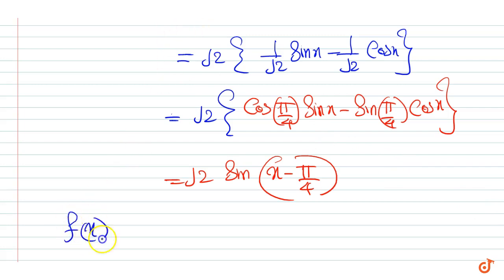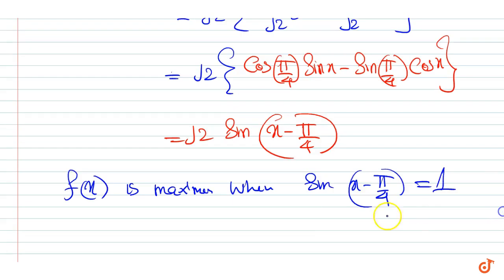Therefore, f(x) is maximum when sin(x - π/4) = 1 and minimum when sin(x - π/4) = -1.